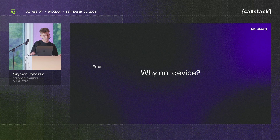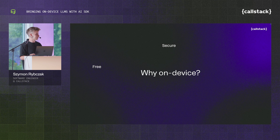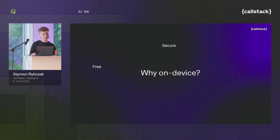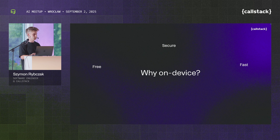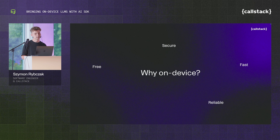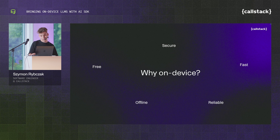Let's go through the benefits of on-device AI. First, it's free — we don't need to pay for tokens or the API. It's also secure: we're not sending data anywhere, so we can use it with private data, health data, or legal stuff. It's fast — I have demos to show. It's reliable, works everywhere, avoids API downtime scenarios, and works offline — in a cave, in airplane mode, on the train.